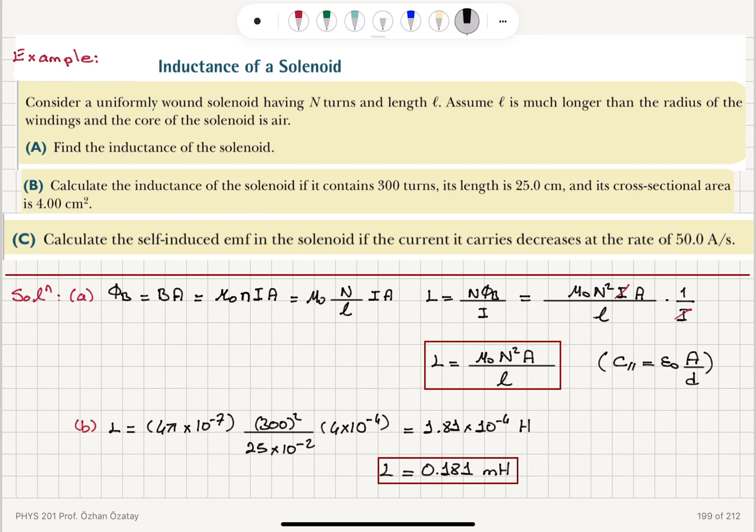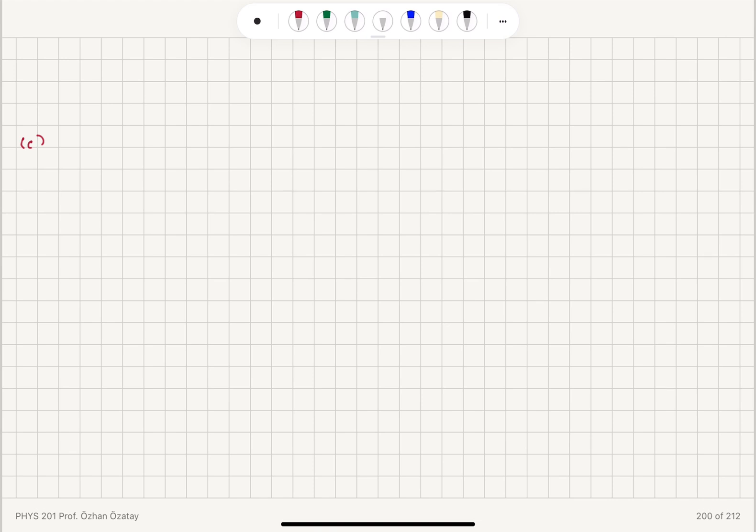And you can see that this can be written as, because it is flux divided by the current, flux is Tesla meter squared. So this is 1.81 times 10 to minus 4 Tesla meter squared divided by ampere. That's the N phi B over I unit. So SI unit that it gives us. So let's play with these units a little bit.